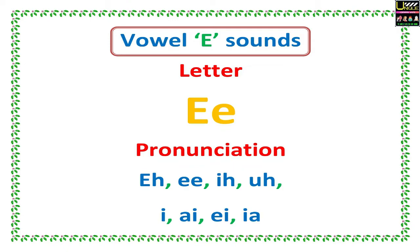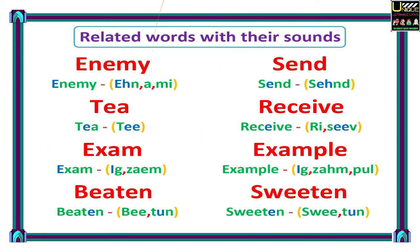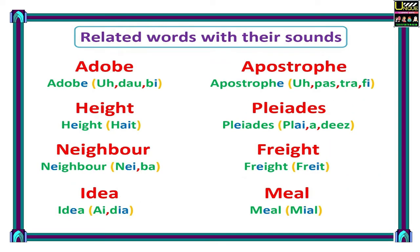Pronunciation and related words with the E sound: Enemy, Sent, Receive, Exam, Example, Beaten, Sweetened, Adobe, Apostrophe, Height, Pleiades, Neighbor.